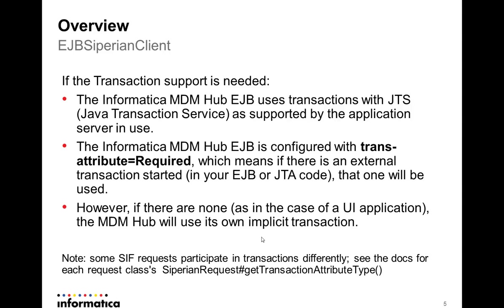If transaction support is needed, Informatica EMDM hub EJP uses transactions with JTS — Java Transaction Service — which is available in all application servers that support MDM, like WebLogic and JBoss. In this video I will demo how to configure it for JBoss EJP 6.1. Informatica EMDM hub EJP is configured with transaction attribute 'Required', which means if there is an external transaction started in your EJP code, you can use that external transaction. If it is a different transaction attribute, then you cannot use it this way.